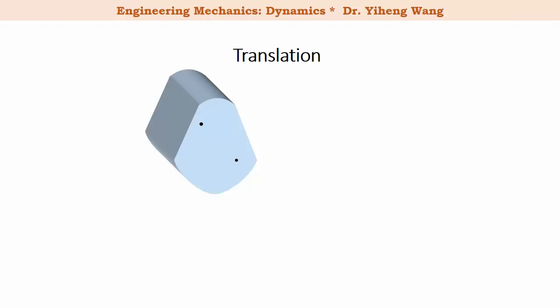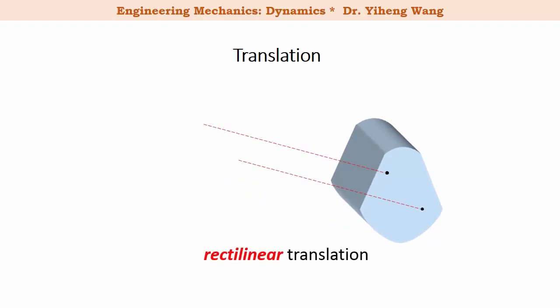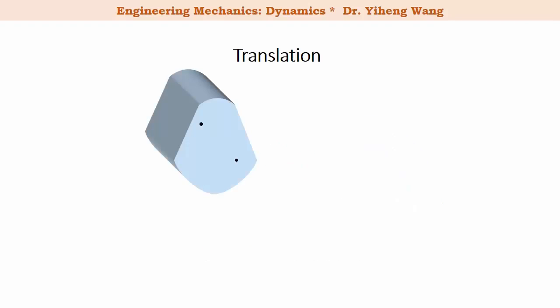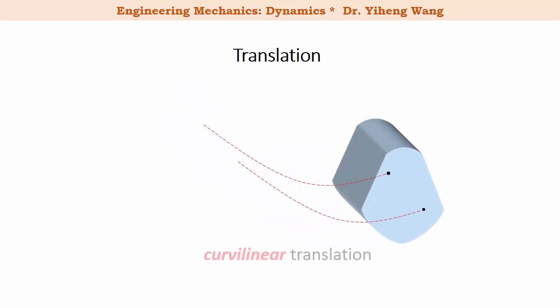During translation the path could be a straight line which is called rectilinear translation, or the path could be a curve, and this is known as curvilinear translation. Either way, during translation for any two points on this rigid body their paths are identical.